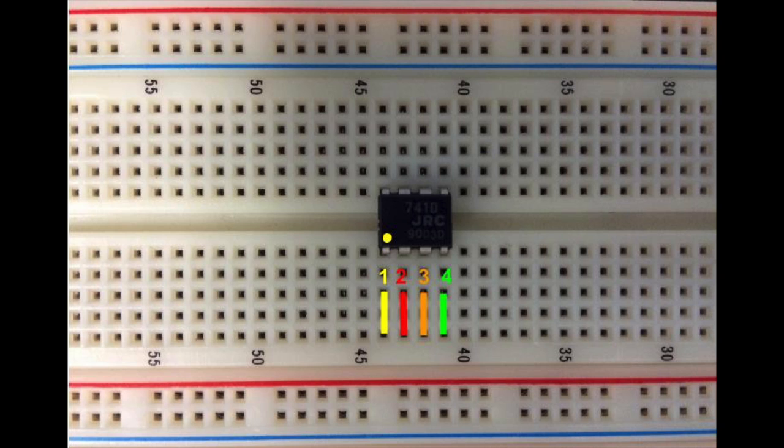The holes below each pin are connected, so that if you put a wire into any one of the holes below the pin it's directly connected to the pin of the chip.